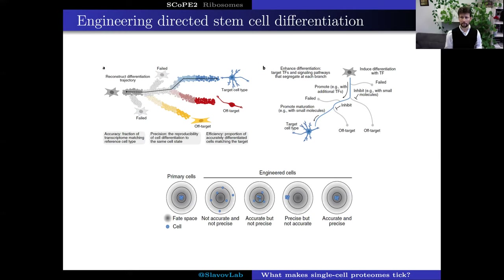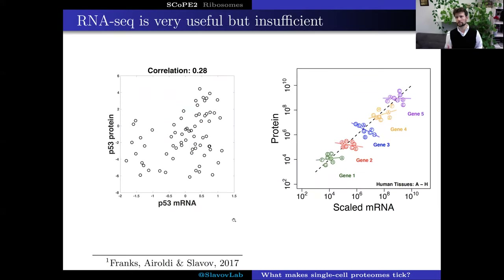This type of experimental paradigm has motivated great interest in the development of single-cell methods, and recently single-cell RNA sequencing has made tremendous progress in that direction. However, as useful as these RNA measurements are, they're not sufficient to characterize what's going on in different cells.